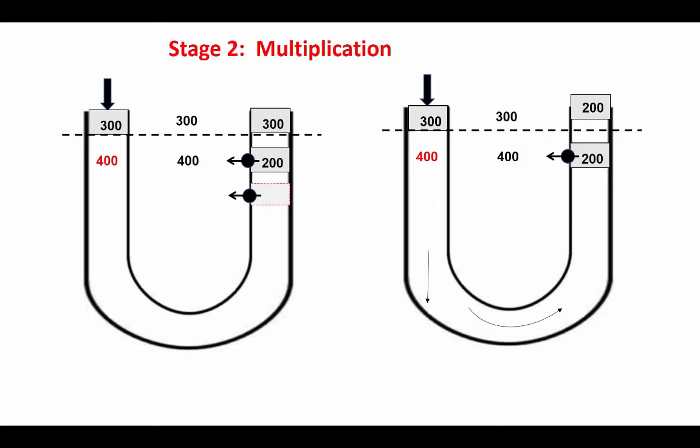In the next step we are going to start explaining the multiplication. The left hand side is exactly the duplication of the previous figure, where we have concentration in the descending limb, concentration in the medullary interstitium, and dilution in the ascending limb.